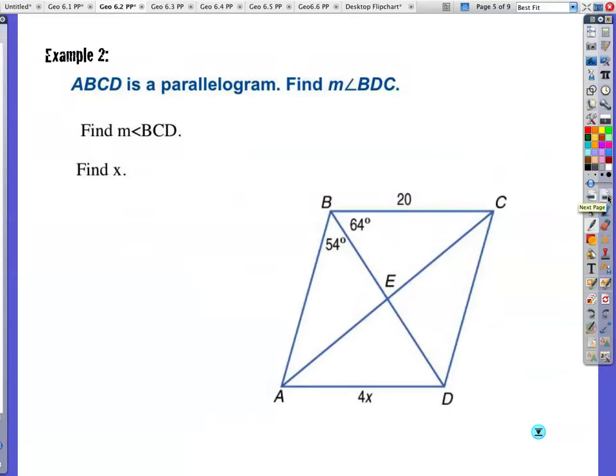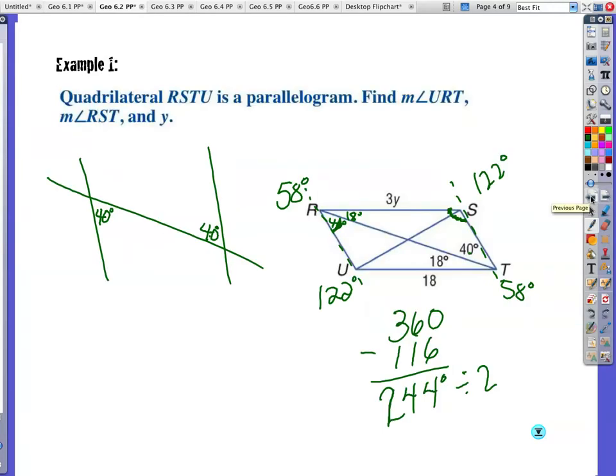244 degrees left between these two, and these angles are congruent. So I just divide that by 2. I get 122 degrees over here, and another 122 degrees over here. Okay, I've got to go back. You guys wanted to catch that mistake. I never found y. Opposite sides are congruent on a parallelogram. So this side right here is congruent to this side right here. So 3Y equals 18, so Y has to be equal to 6.